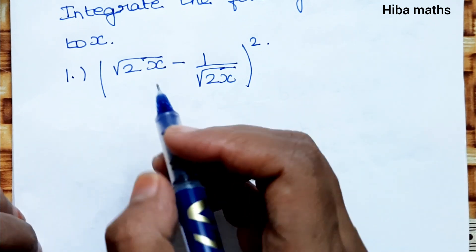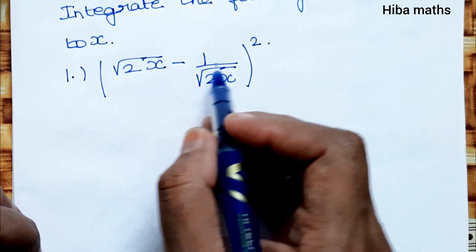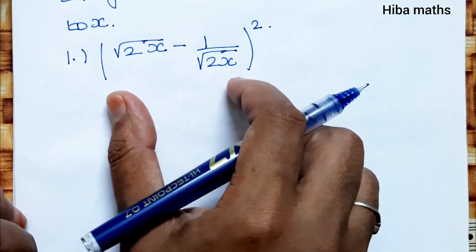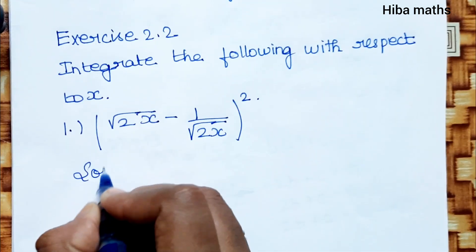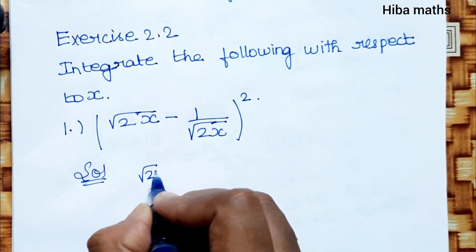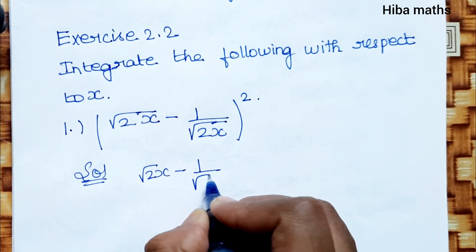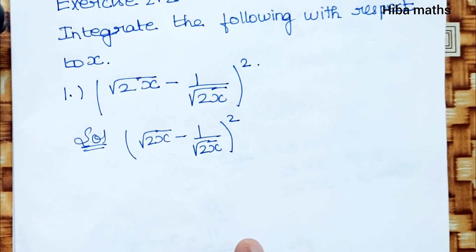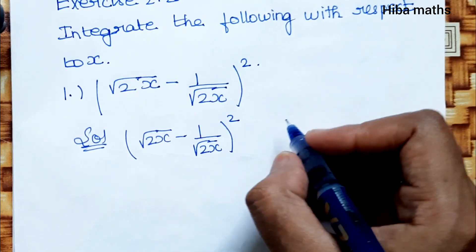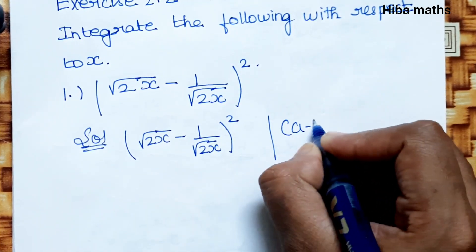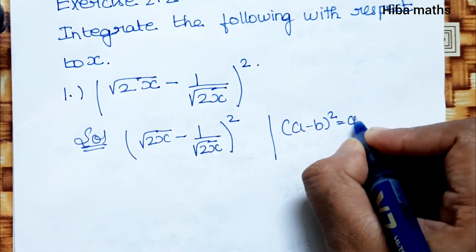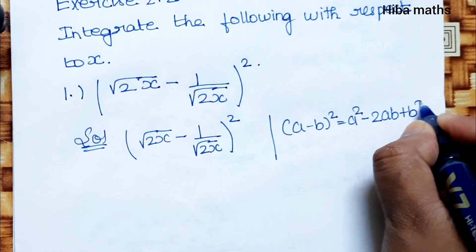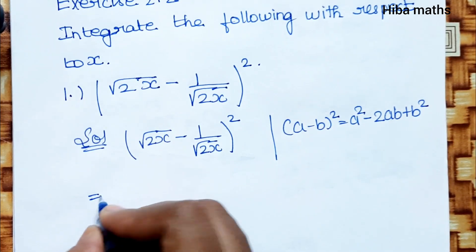If we solve it, we have the integral of (√(2x) - 1/√(2x))² with respect to x. First, we will simplify a little bit before integrating. What formula will we use? We'll use (a - b)² = a² - 2ab + b².